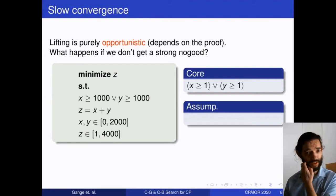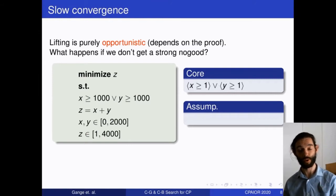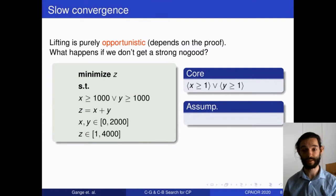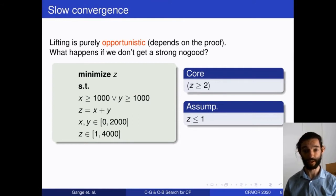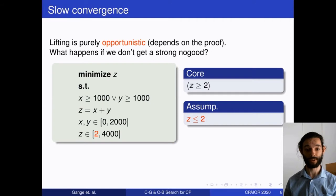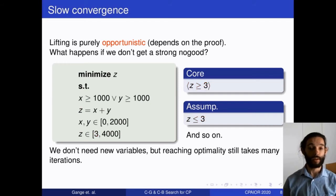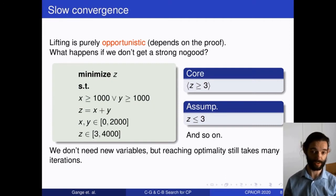Lifting works when it works but there's no guarantee. If we don't get the 1000 core immediately, we introduce variable z with lower bound one, then get a new core of z growing to two — we don't need a new variable, just increase the lower bound by one. We add our new assumption, get a new core, and repeat a thousand times. Less bad than before since we don't introduce new variables, but still not great due to per-iteration overhead.